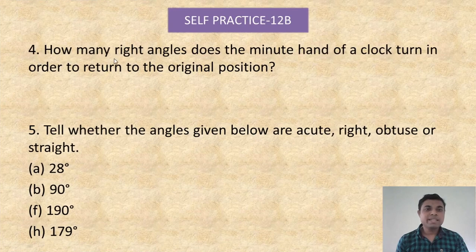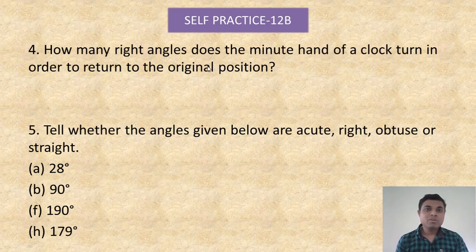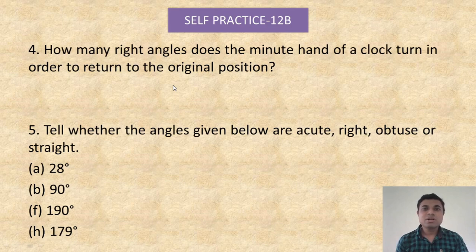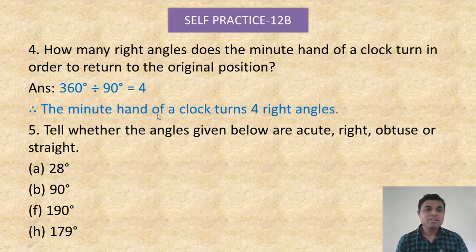Question number four: how many right angles does the minute hand of a clock turn in order to return to the original position? The minute hand is at 12, and when it returns to 12 that means a complete rotation — 360 degrees. One right angle equals 90 degrees, so divide 360 by 90. That means four right angles. The minute hand of a clock turns four right angles, which means one complete rotation.